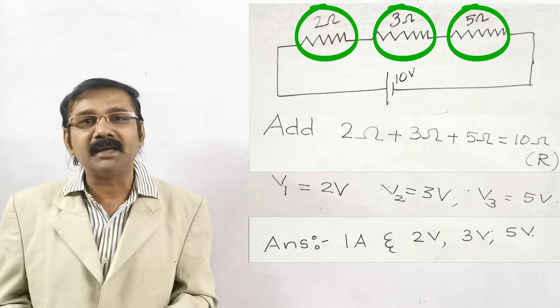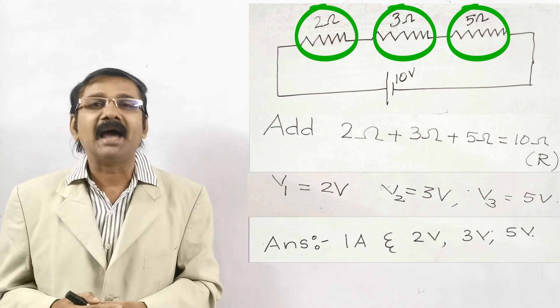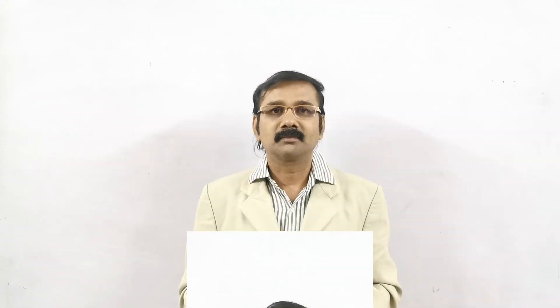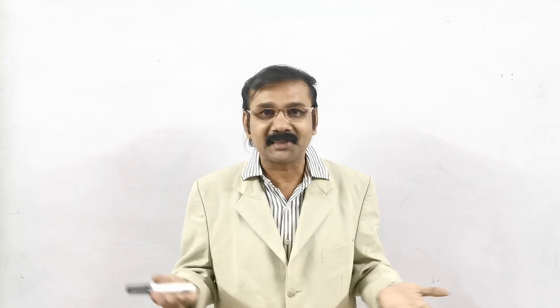Now the option is B. It is 1 ampere, 2 volt, 3 volt and 5 volt. Yes, what an easy technique it is. I hope you enjoyed this sum and enjoyed this trick.